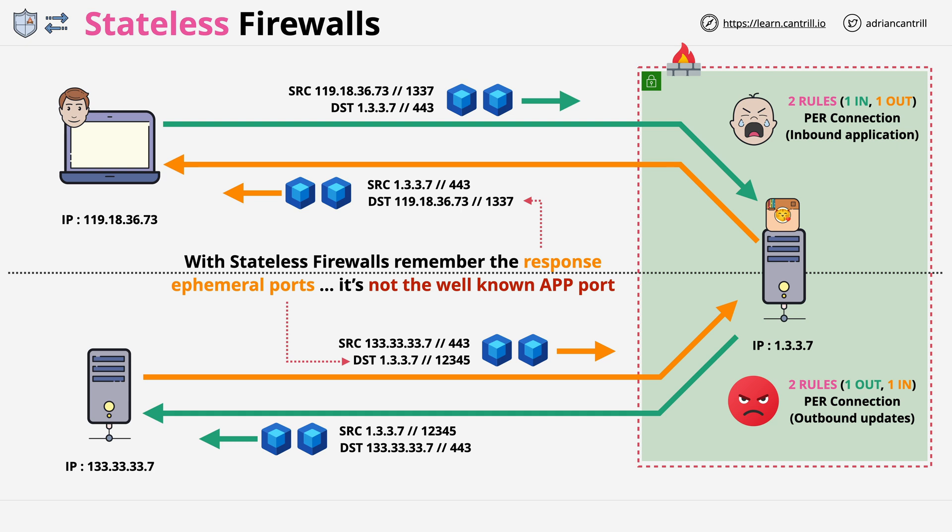Just focus on these two key elements: every connection has a request and a response, and they can both be in either direction. A request can be inbound or outbound, and a response will always be the inverse directionality of the request. Also, keep in mind that rules for the response will often need to allow the full range of ephemeral ports — that's not a problem with stateful firewalls.